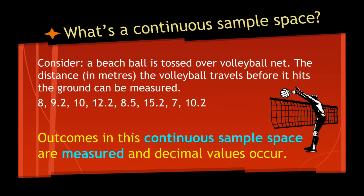Now the second question: what's a continuous sample space? Let's consider a beach ball tournament. If we toss a beach ball over a volleyball net, we can measure the distance that the ball travels before it hits the ground, using meters and a meter stick — and in this case we're going to have decimals. We are dealing with a continuous sample space because our outcomes are measured and we can have gradations between eight meters and nine meters: 8.1, 8.56, 8.39256871. You get the picture.